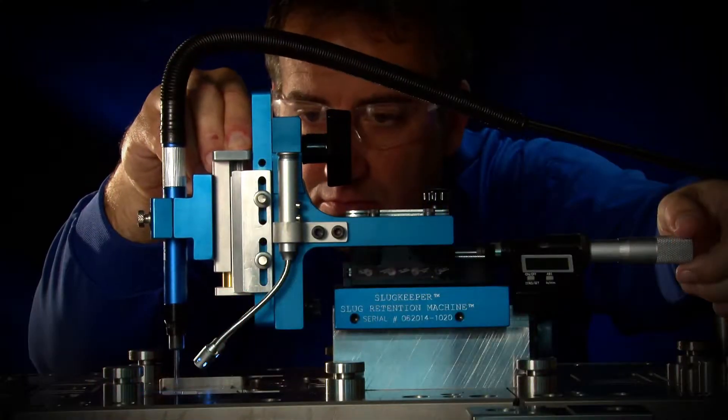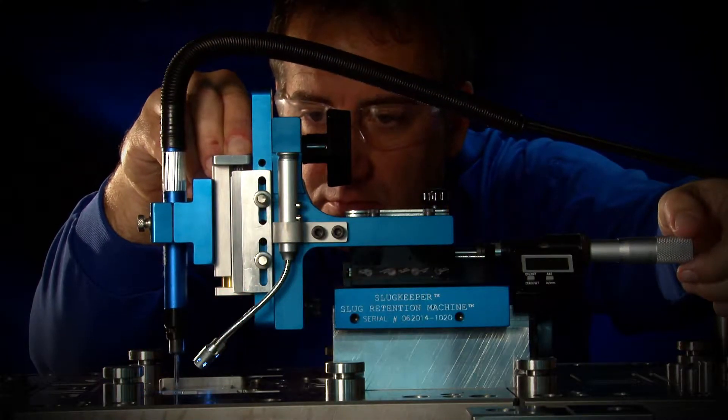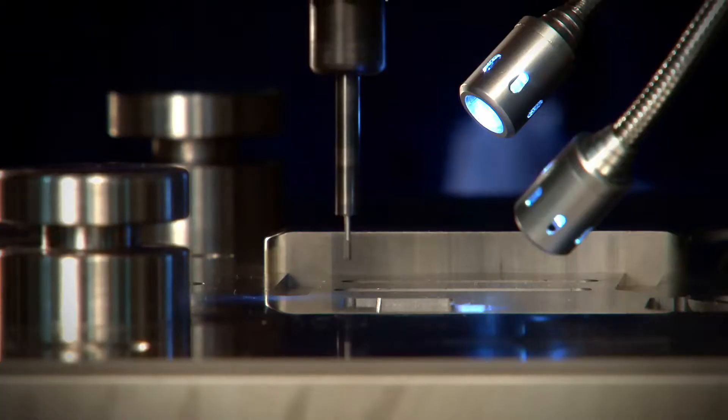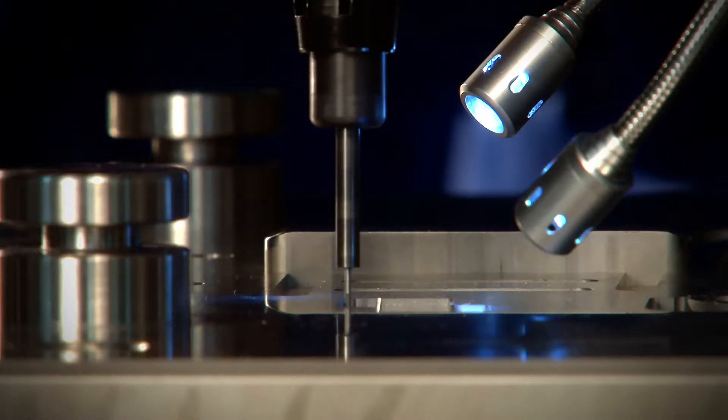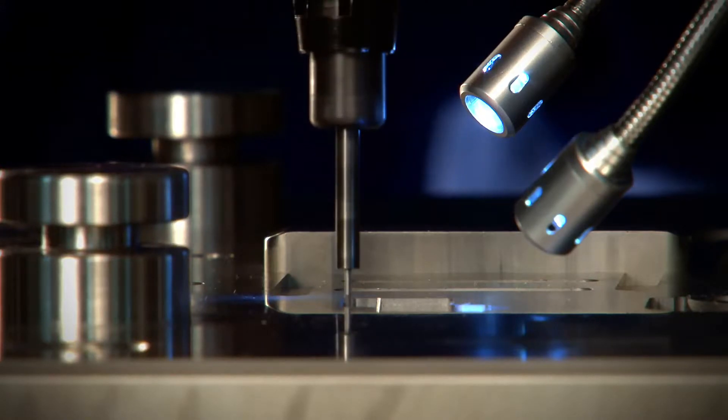The retention grooves can be machined into the die openings while the die is still in the press, resulting in even greater savings by eliminating the need to remove the die from the press, disassemble it and return it back to the press.